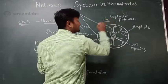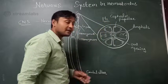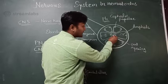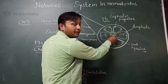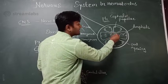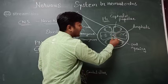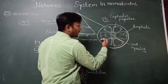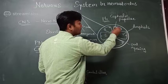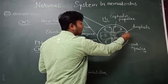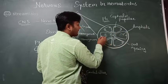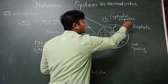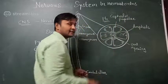There are 16 cephalic papillae total: 6 on the inner circle and 10 on the outer circle around the oral opening. You can count 6 on the inner circle and 10 on the outer circle, making 16 cephalic papillae altogether.